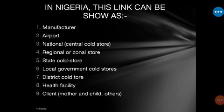Then we have the local government store. For instance, here in Kaduna, after the vaccine has been brought to the state store, they are divided into the number of local governments in Kaduna state — I think it is 23 or 27. The vaccines are then transported to those various local governments.